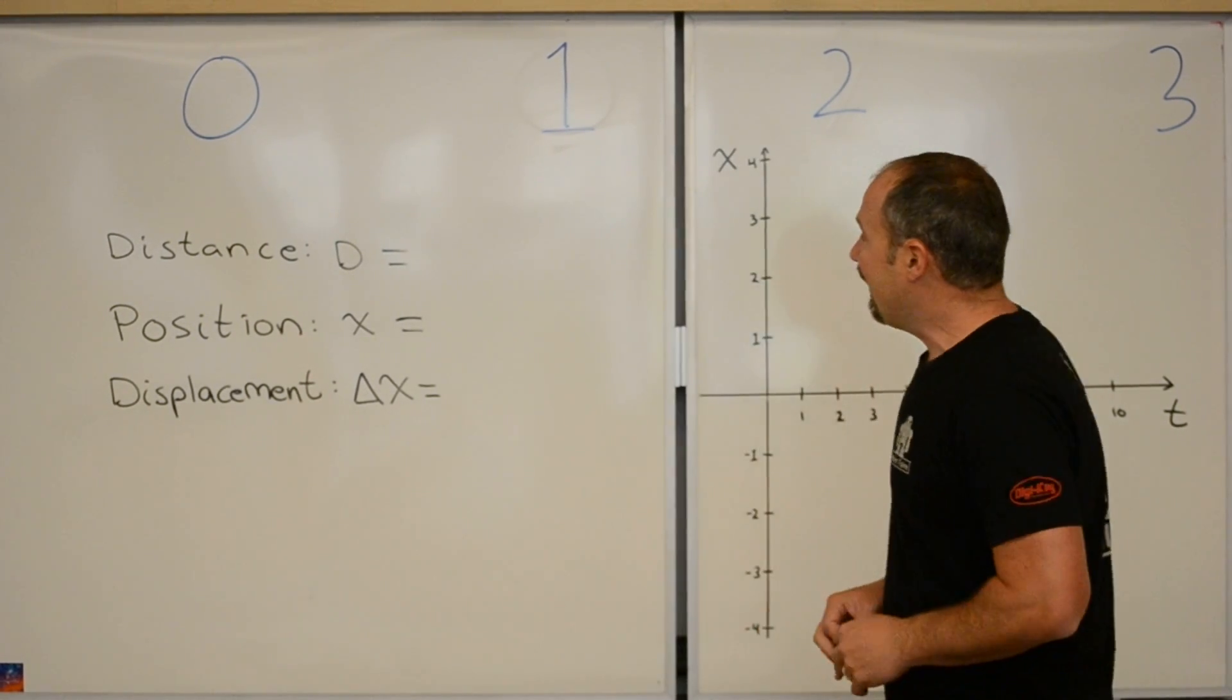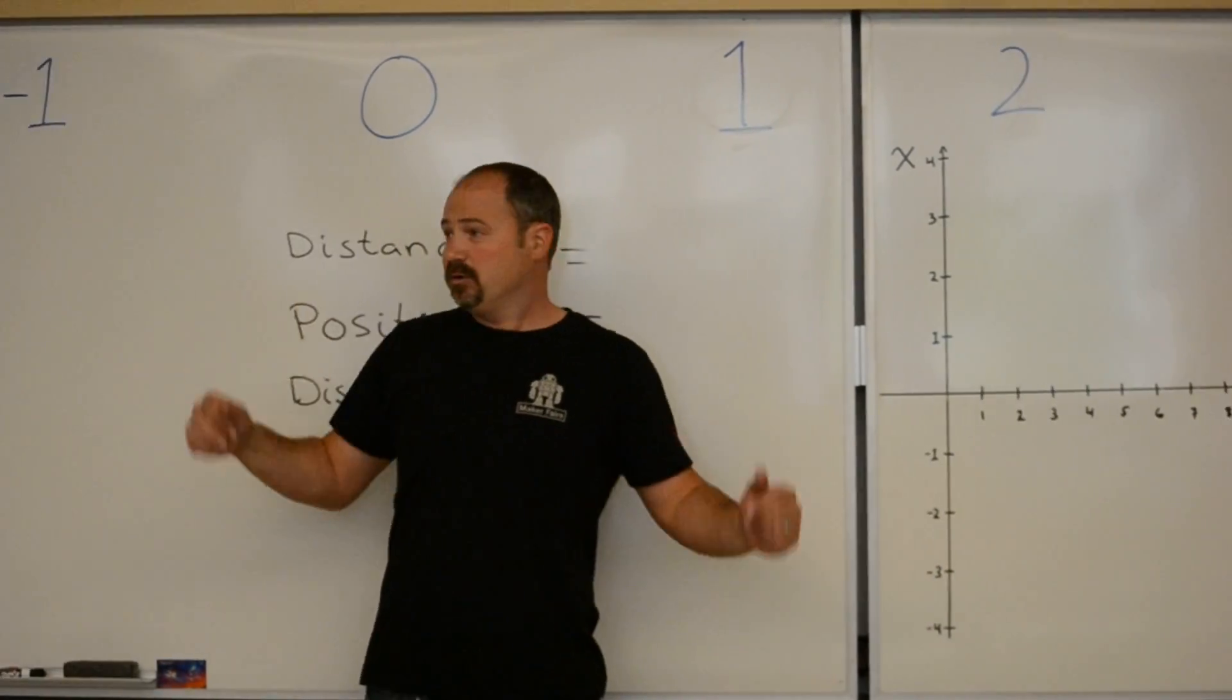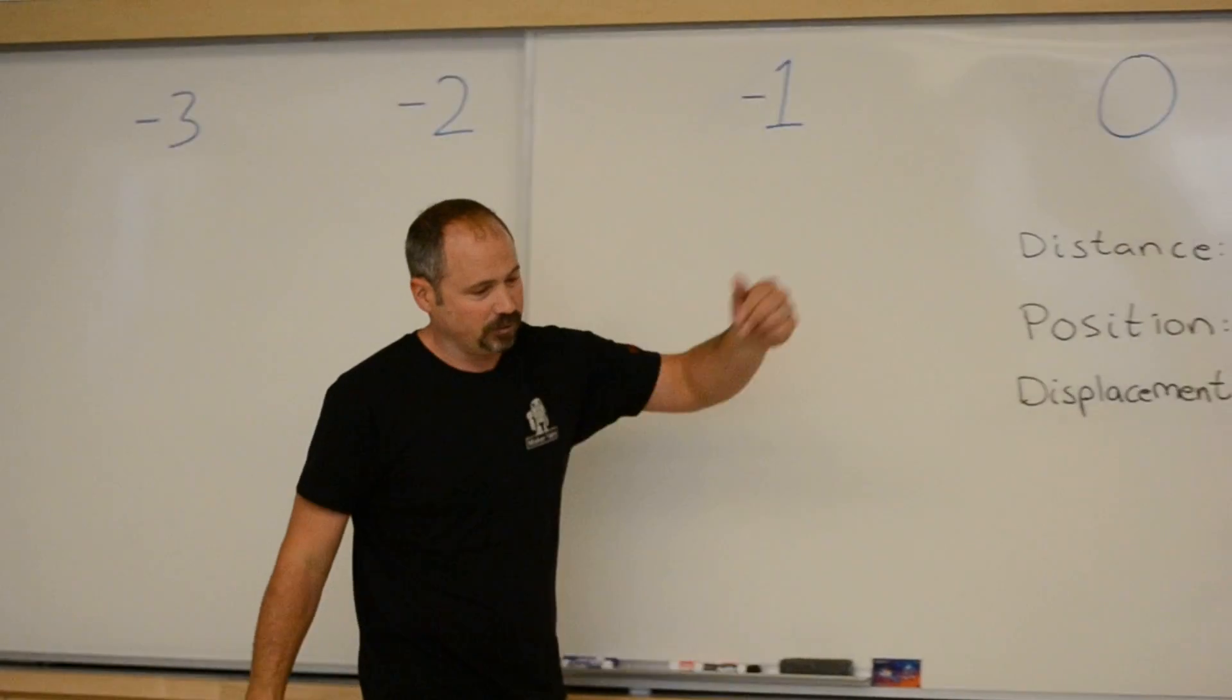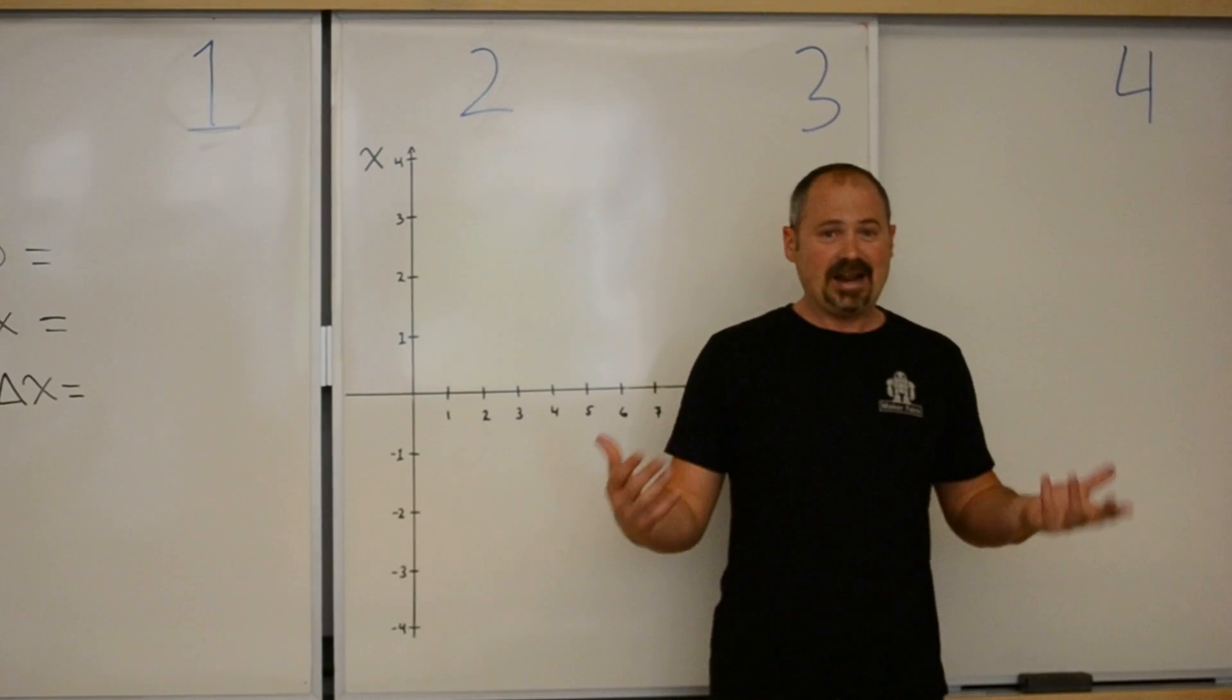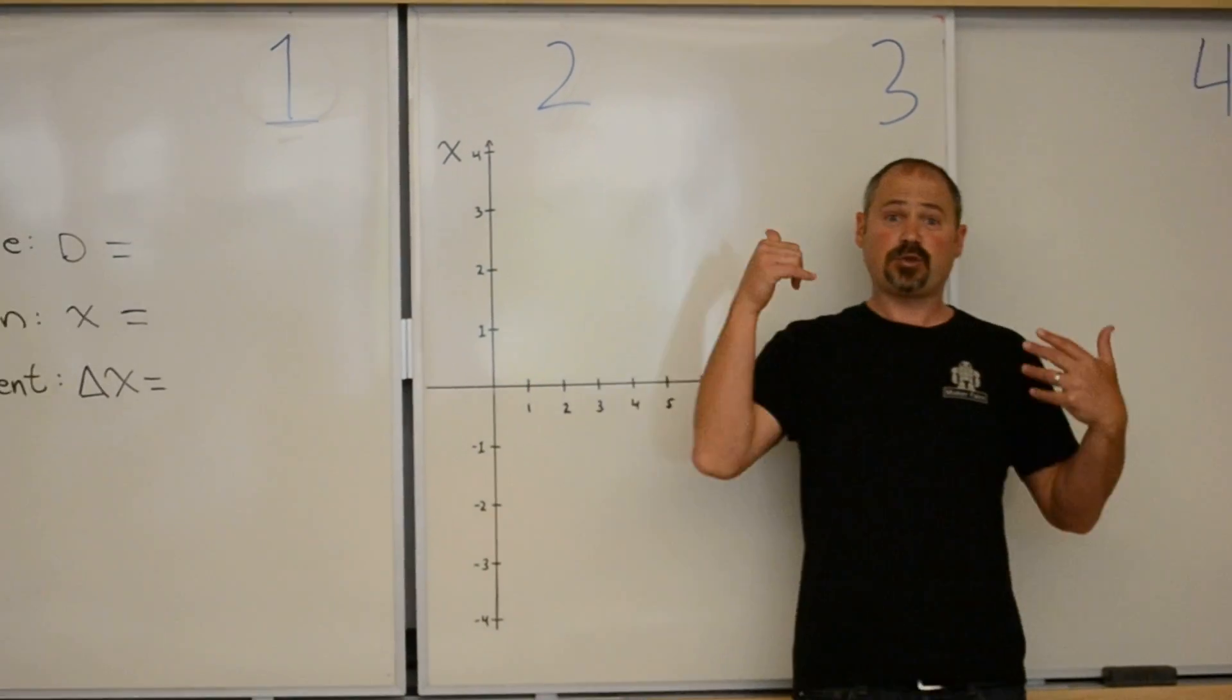I have here a number line. This is position 0, this is, for example, position negative 3, and then over here is positive. If I'm here right now, my position, that is my x coordinate, is 3.